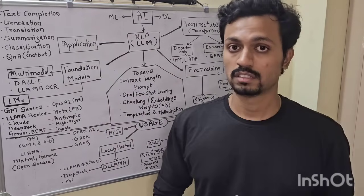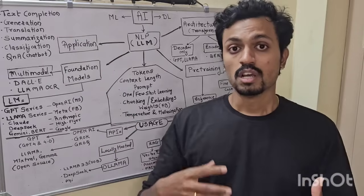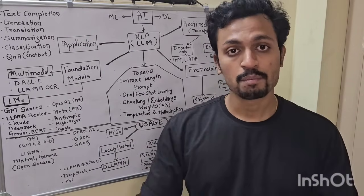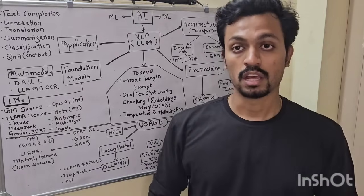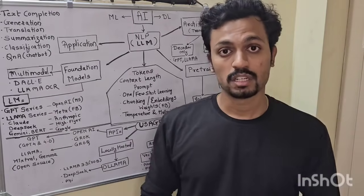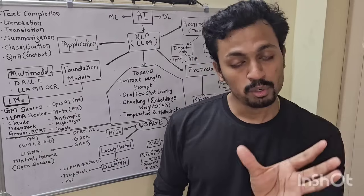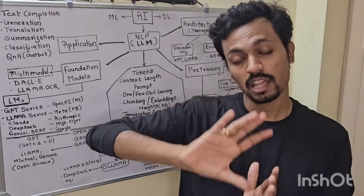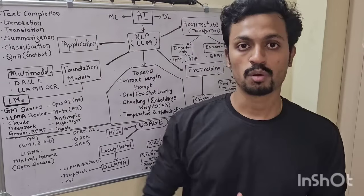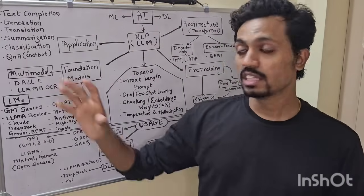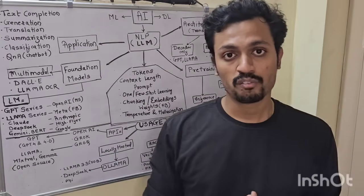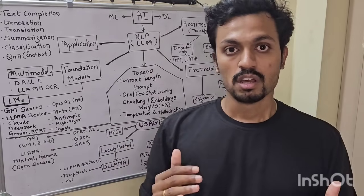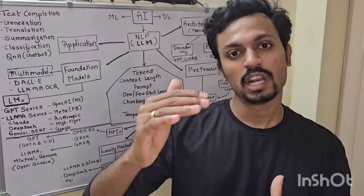These are the major applications. Then Generation — if you give a topic, the model can generate information about it. Then Translation — like Google Translate: if you give a sentence in one language, the model outputs it in any other language. Then Summarization — if you give a paragraph, the model can give you a 2-3 line summary.